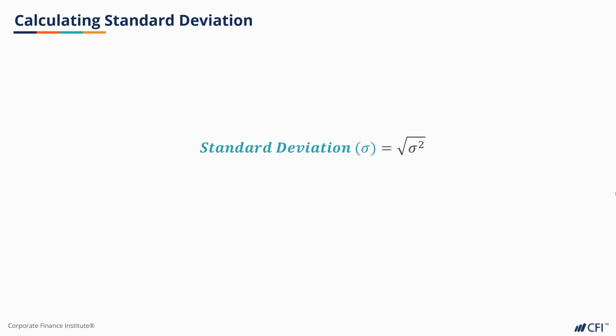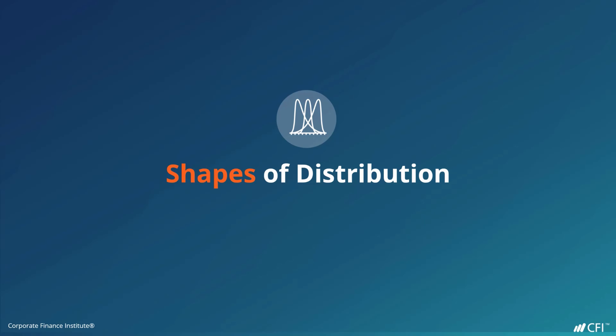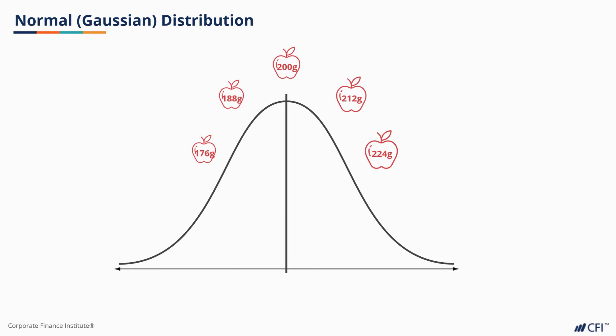Sometimes it is even referred to as the sigma. Often, you'll see the variance written simply as the standard deviation squared. If we square our standard deviation, we get right back to our variance. We've learned methods for describing the central tendency of our data and the spread of our data. Let's look at ways to describe the shape of our data.